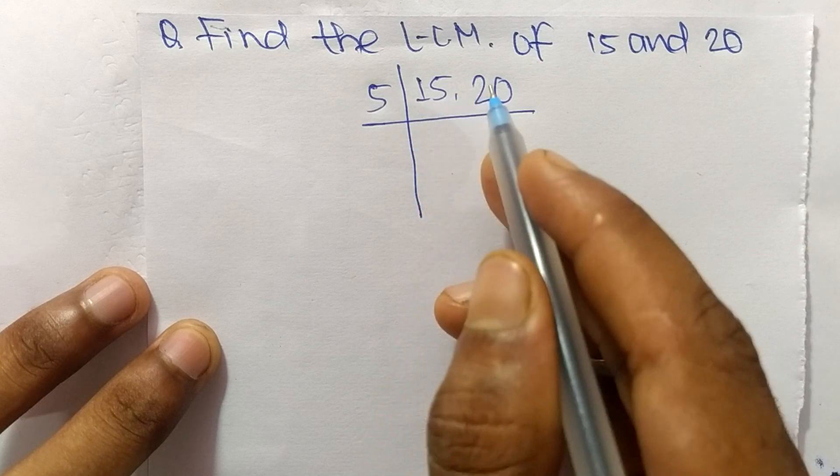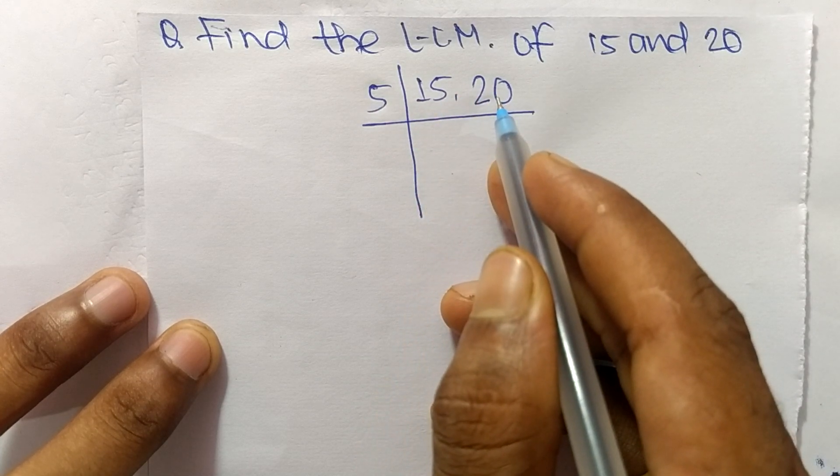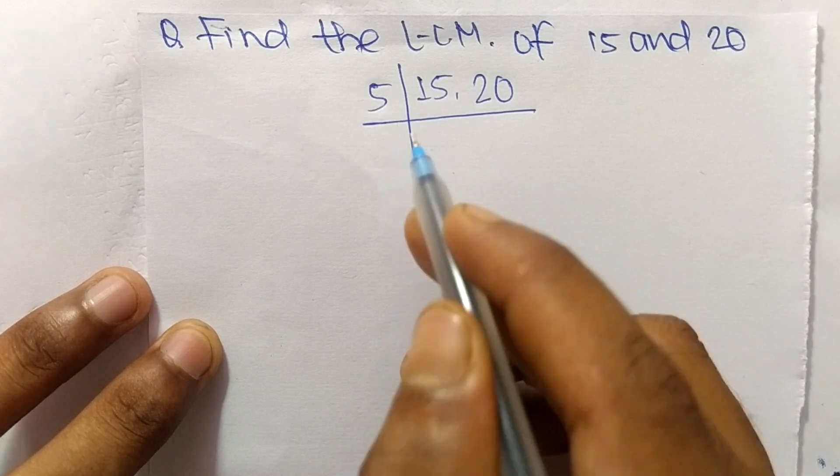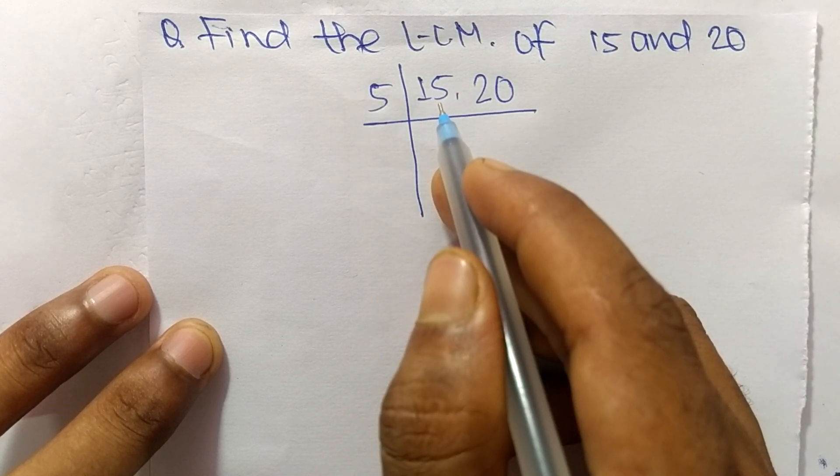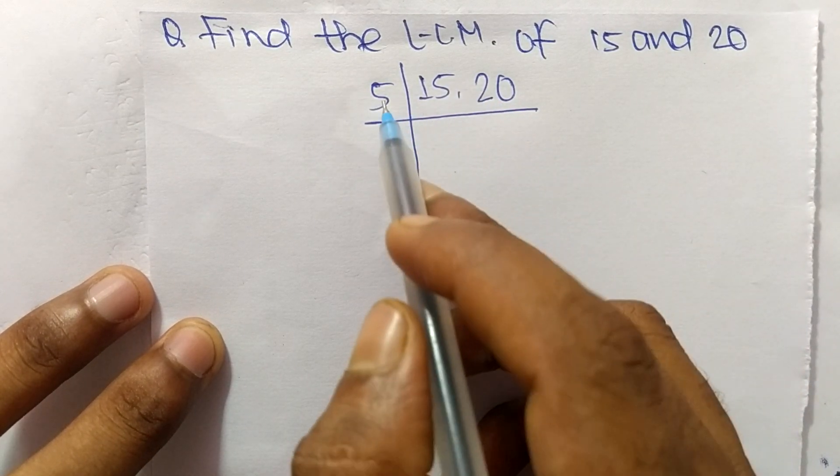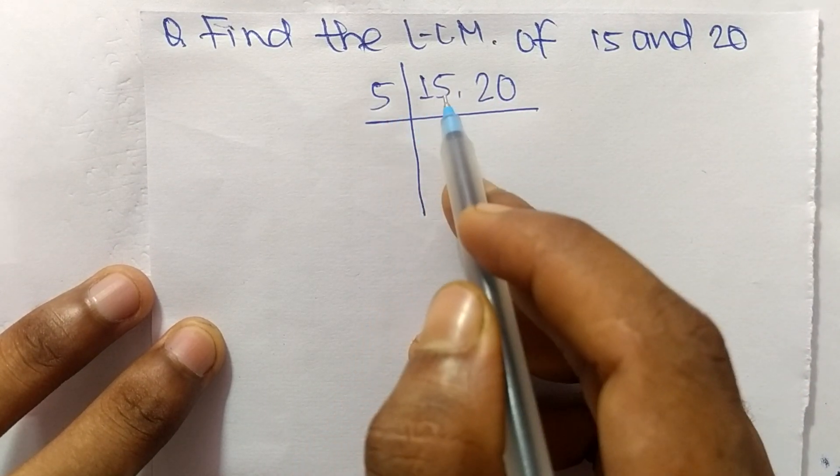When we take 2, then 2 can exactly divide 20 but can't divide 15. And when we choose 3, then 3 can exactly divide 15 but can't exactly divide 20. So we take here 5 which can divide both numbers 15 and 20. 5 times 3 means it is 15 and 5 times 4 means it is 20.